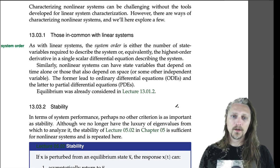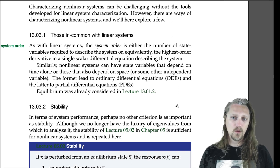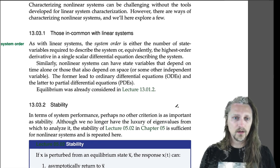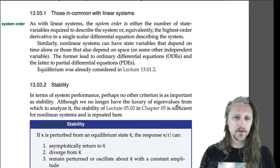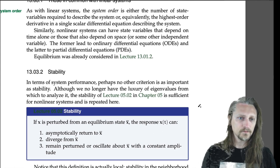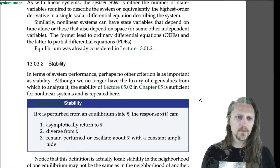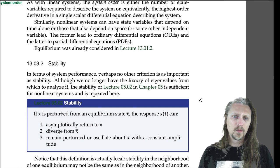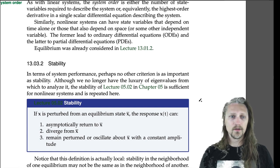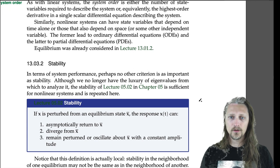Equilibrium was already considered in lecture 13 part 1, but we're going to return to that when we talk about stability. In terms of system performance, perhaps no other criterion is as important as stability. Although we no longer have the luxury of eigenvalues from which to analyze it, the stability definition from lecture 5.2 in chapter 5 is sufficient for nonlinear systems and is repeated here.